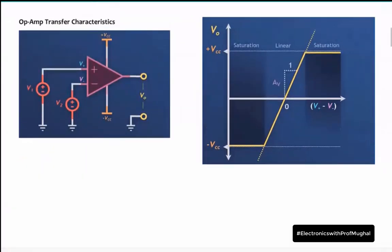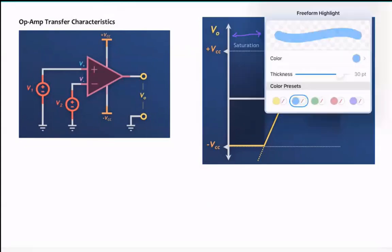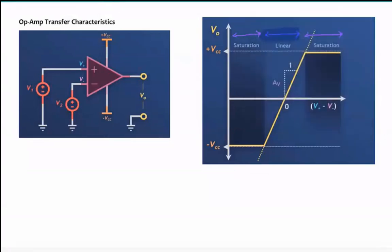Any device — whether an operational amplifier, transistor, or diode — works within a specific region. If it goes beyond that region it won't work correctly; that region is called the saturation region, as shown on this graph. The middle region is the linear region, and we must ensure our op-amp operates within that linear region to function as an amplifier.